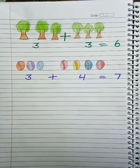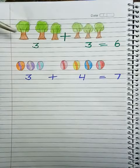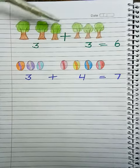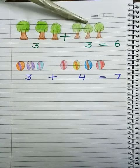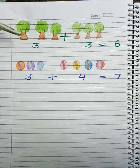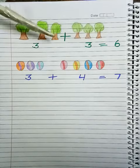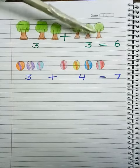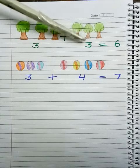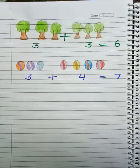Now see another example. How many trees are there? 1, 2, 3. And here 1, 2, 3. How many all together? Let's count. 1, 2, 3, 4, 5, 6. Means 3 plus 3 equals 6.